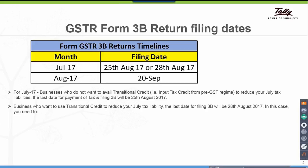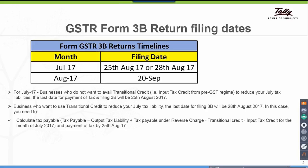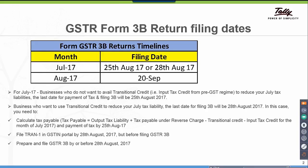Businesses who want to use transitional credit to reduce your July tax liability, the last date for filing 3B will be 20th August. In this case, you need to calculate tax payable, i.e., equal to output tax liability plus tax payable under reverse charge, less transitional credit, less input tax credit for the month of July, and pay the tax by 25th August. File TRAN 1 in GSTN portal by 20th August but before filing GSTR 3B. Prepare and file GSTR 3B by or before 20th August 2017.